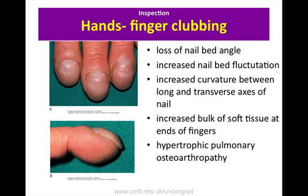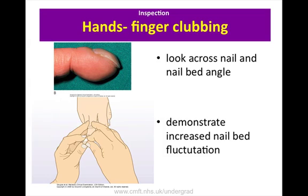When looking for finger clubbing, look for four features: loss of nail bed angle, which can be seen by looking across the nail and nail bed; increased nail bed fluctuation; increased bulk of soft tissue over the terminal phalanges; and increased nail curvature, which is a later stage. Show the examiner you are looking across the nail and nail bed angle — this is normally obtuse but disappears in early clubbing. Place your thumbs under the pulp of the terminal phalanx and attempt to move the nail within the nail bed using your index finger; the spongy feel confirms nail bed fluctuation.